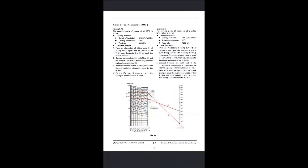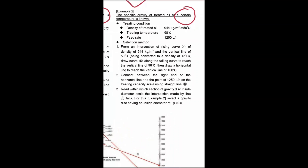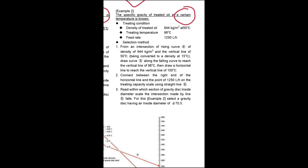We have discussed Case 1 where specific gravity was known at 15 degree centigrade. Now we are going to check Case 2, where we know the specific gravity of the treated oil at a certain temperature other than 15 degree centigrade. We are going to take the case where the density of the treated oil is given at 50 degree centigrade — it could be 60 or 40, it is not compulsory that it is always 50. Here we are taking: density given at 944 kg per meter cube at 50 degree centigrade, treating temperature at 90 degree centigrade, and feed rate at 1250 liters per hour. For these conditions, we are going to check the appropriate gravity disk size.